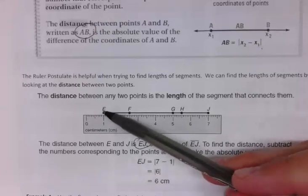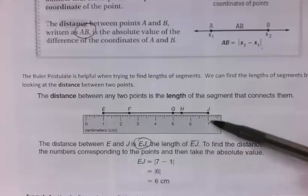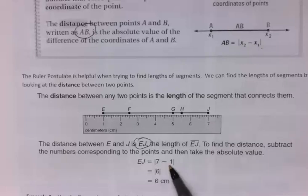Well, E is at 1 and J is at 7. So if I subtract them, I'll get the value that represents the distance, in this case 6.